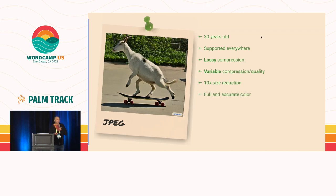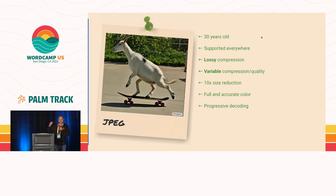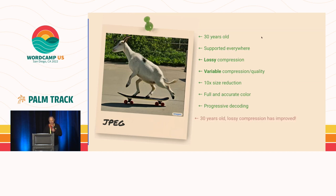JPEG also had full and accurate color — unlike GIF, it had a 24-bit color palette and ICC color profiles, so in theory you could have images that showed the correct color to people. It also had progressive decoding, where a JPEG image loads blurry and then more details come in and it becomes sharper. Unfortunately, in WordPress we don't actually get progressive decoding, because when you upload your image, WordPress recompresses it into several smaller sizes, and the PHP tools we use don't support this type of encoding. So you don't really get that in WordPress, even though it's a great feature of JPEG.